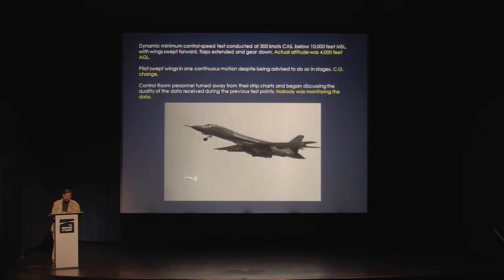The dynamic minimum control speed test was conducted at 300 knots calibrated airspeed below 10,000 feet mean sea level, with wings swept forward, flaps extended, and gear down. The actual altitude above the ground was just 4,000 feet. The pilot swept the wings in one continuous motion, despite being advised to do so in stages to manage changes in the center of gravity. At the time, control room personnel had turned away from their strip charts to discuss the quality of the data received during previous test points. Nobody was monitoring the data when the airplane stalled and spun.